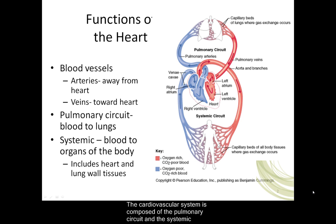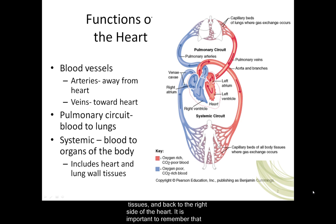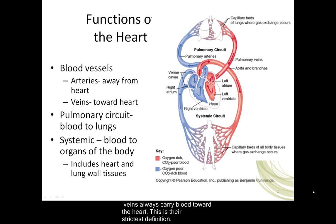The cardiovascular system is composed of the pulmonary circuit and the systemic circuit. The pulmonary circuit takes blood from the right side of the heart to the lungs and back to the left side of the heart. The systemic circuit pumps blood from the left side of the heart through systemic vessels and peripheral tissues and back to the right side of the heart. It is important to remember that vessels called arteries always carry blood away from the heart, and vessels called veins always carry blood toward the heart. This is their strictest definition.